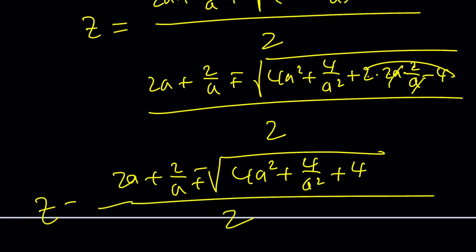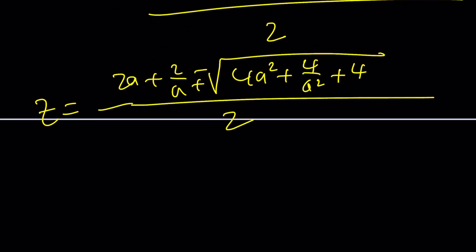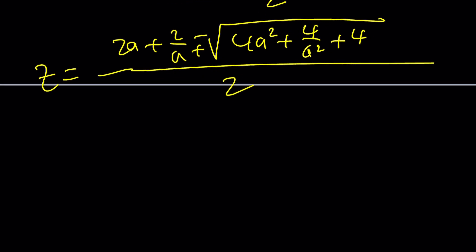That gives me 4A squared plus 4 over A squared plus 4. Under the radical, we have 2A plus 2 over A plus minus, all over 2. And this is z. Depending on the value of z. Didn't you say z is going to be complex? Where does the complexity come in? I don't know. From here, we can make a common denominator and take the 4 out. It's going to look like A plus 1 over A plus minus the square root of A squared plus 1 over A squared plus 1.